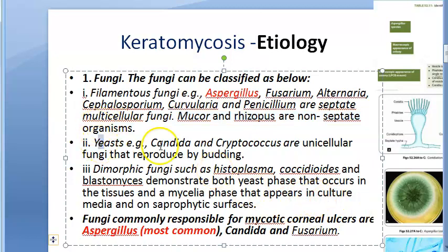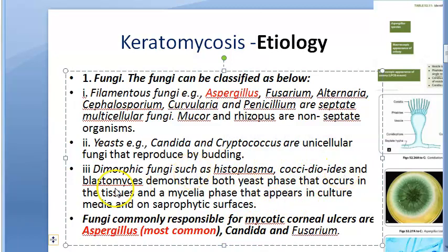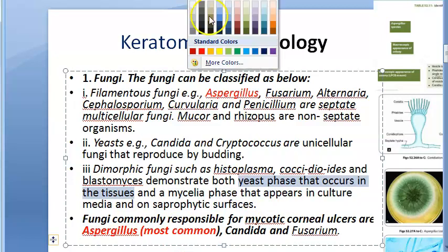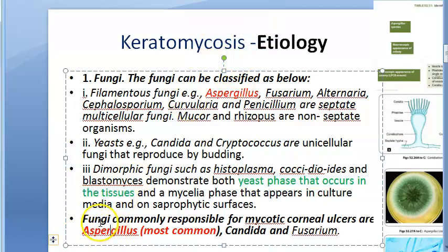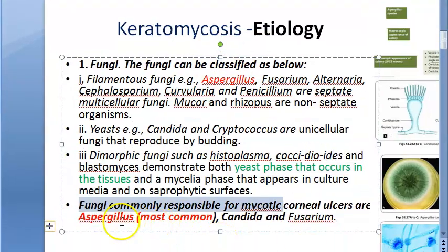Then yeasts — Candida and Cryptococcus. Then dimorphic fungi, which exist in both mold and yeast phases: Histoplasma, Coccidioides, and Blastomyces. They are usually in yeast phase inside tissues. The most commonly responsible organisms are Aspergillus, Fusarium, and Candida — remember these three names.